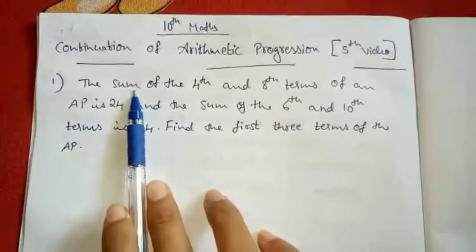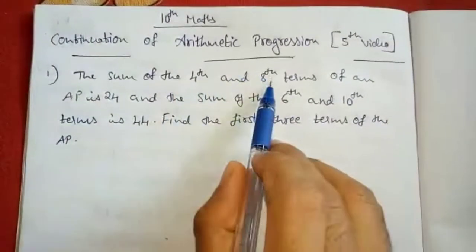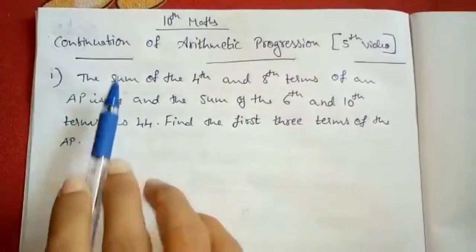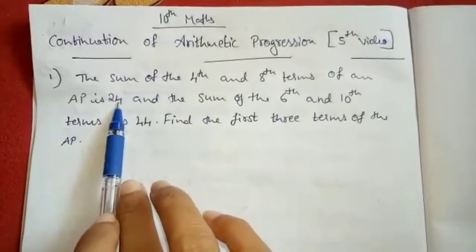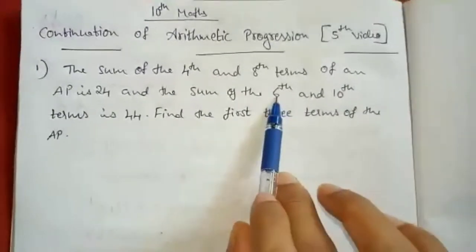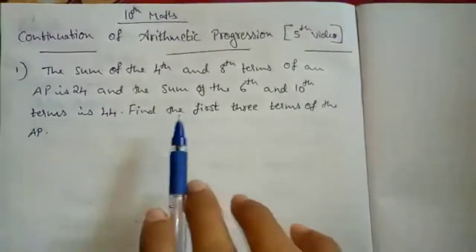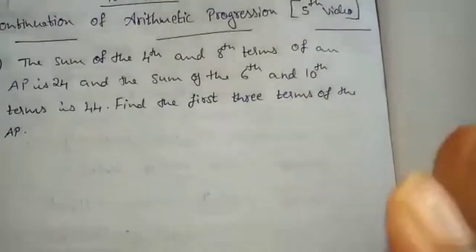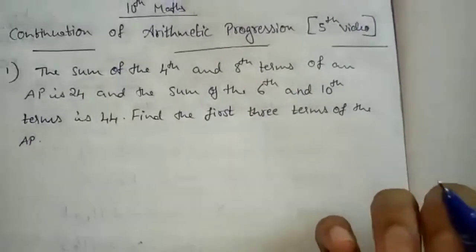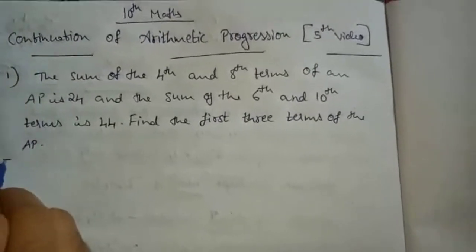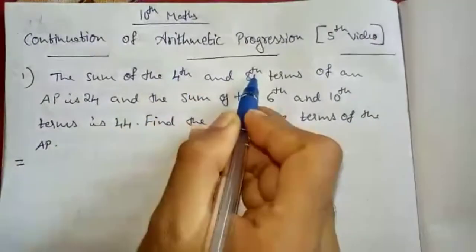So what the question says is: sum of 4th term and 8th term — when you add the 4th and 8th term you should get 24. And when you add 6th and 10th term you should get 44. You have to find the first 3 terms. So if you want to write an AP, what is required? A and D are required. So we have to find A and D first. For that we will use the given data.